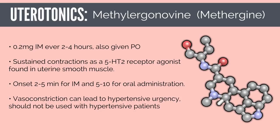Methylergonovine, or Methergine, is another uterotonic commonly used for uterine atony. It is a semi-synthetic amide ergot derivative; the usual dose is 0.2 milligrams intramuscularly every 2 to 4 hours, and it can also be given orally. Methylergonovine works by creating a sustained contraction as an agonist on the 5-HT2 receptor found in uterine smooth muscle. Onset is 2 to 5 minutes IM and 5 to 10 minutes orally. Systemic vasoconstriction can lead to hypertensive urgency, especially in those with chronic HTN, preeclampsia, or those using protease inhibitors for HIV treatment.